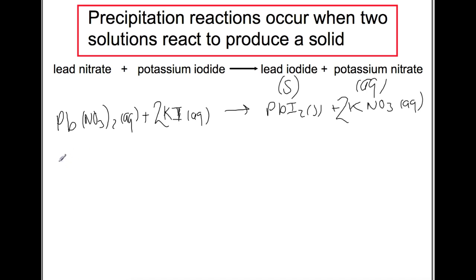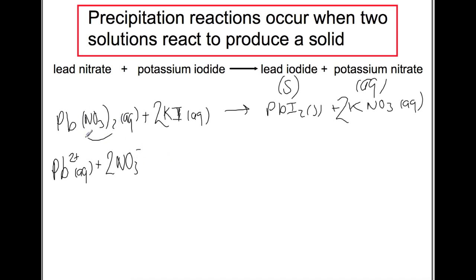We still can't identify our spectator ions from this, so we need to split this up into ionic formula — I have a video on that as well. Taking each part in turn: Pb is a 2+ ion, aqueous. We have two nitrate ions — it's important to transfer the 2 in front of the nitrate when writing ionic formula, aqueous. We have two K+ ions aqueous, and the 2 also multiplies the iodide, so we have two iodide ions. That's all of our reactants.